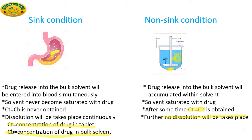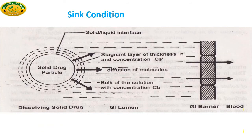The drug simultaneously enters the blood, so the solvent never becomes saturated with the drug. As the drug enters from the gastric fluid into the blood, the solvent never becomes saturated, and here Cs is not equal to Cb. Therefore, dissolution takes place continuously in the stomach, whereas in the non-sink condition, once the solvent is saturated dissolution stops.